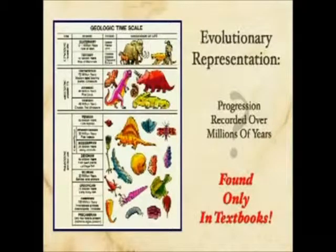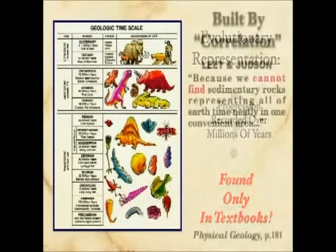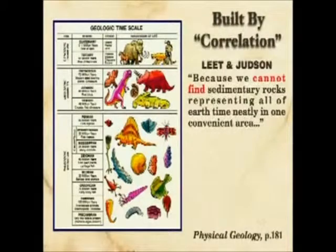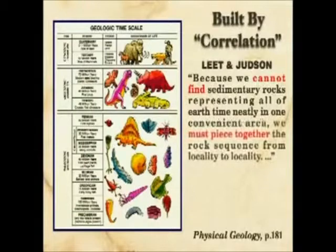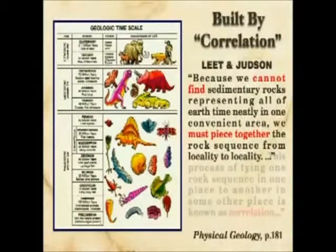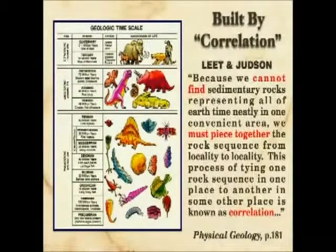Now if that sounds like a rather brash statement, notice the quote from Leet and Judson, one of the typical textbooks used as a geology text in our universities: 'Because we cannot find sedimentary rock representing all of earth time neatly in one convenient area, we must piece together the rock sequence from locality to locality. This process of tying one rock sequence in one place to another in some other place is known as correlation.'